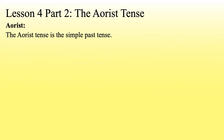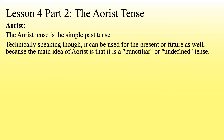Now let's look at the aorist with all that in mind. The aorist tense is the simple past tense. We already have a past progressive with the imperfect giving the idea of duration — this is just the normal, everyday basic past tense. Technically speaking, it can also be used for the present or future, because the main idea of the aorist is that it's punctiliar or undefined. Punctiliar means it's like a point — this happens at a point in time, not over the course of time; it's not progressive.